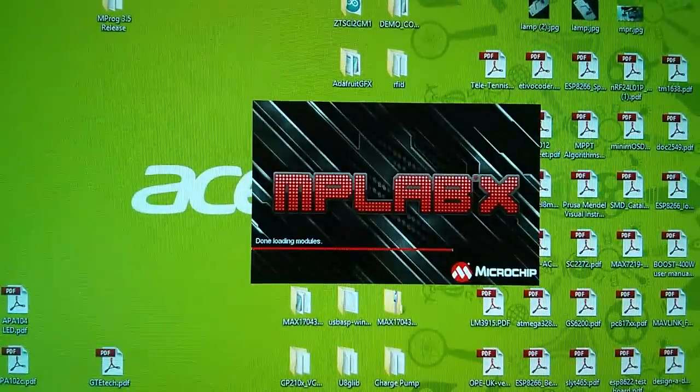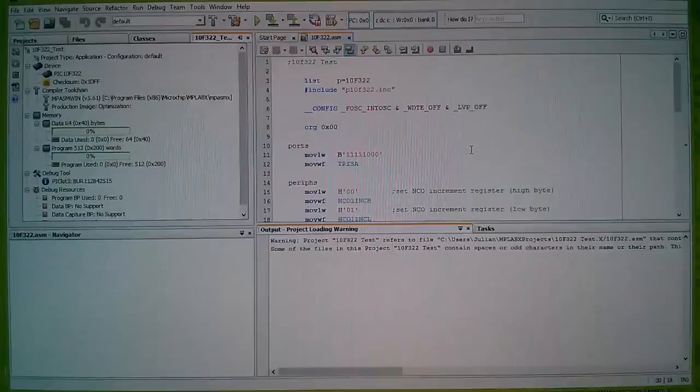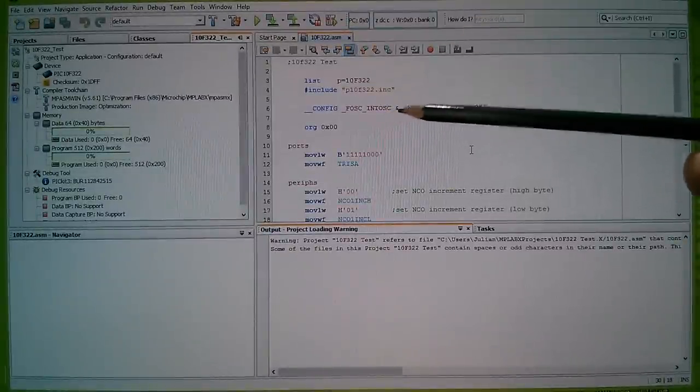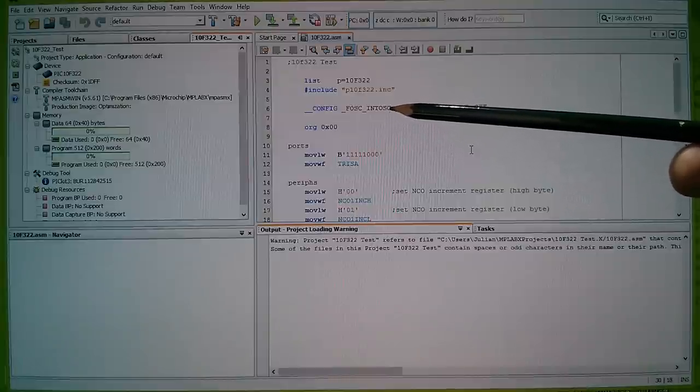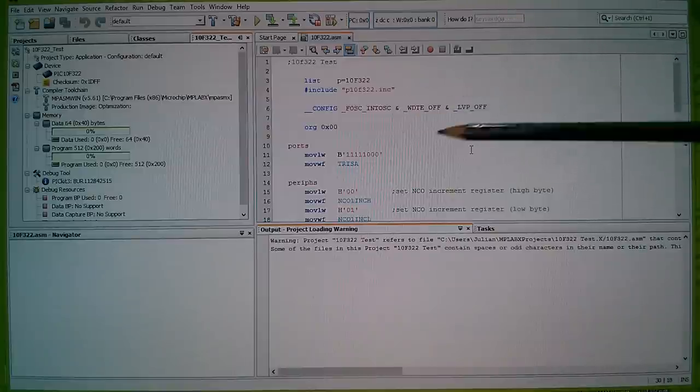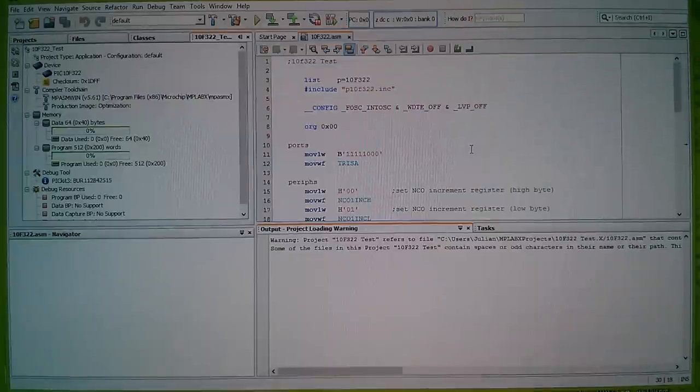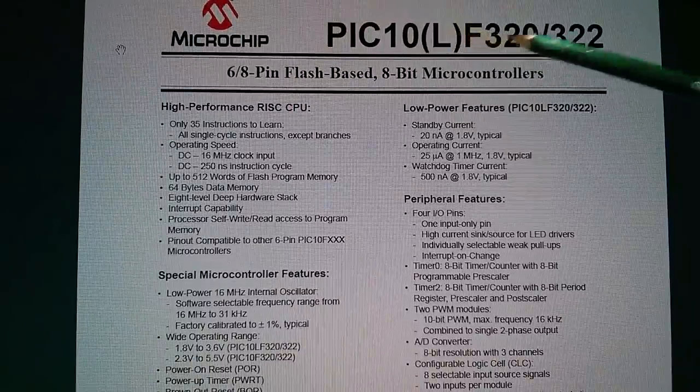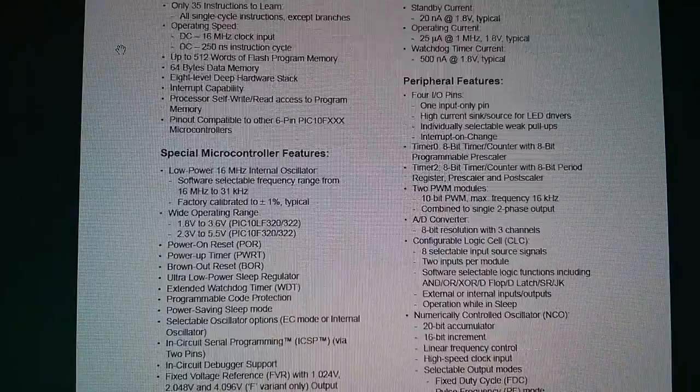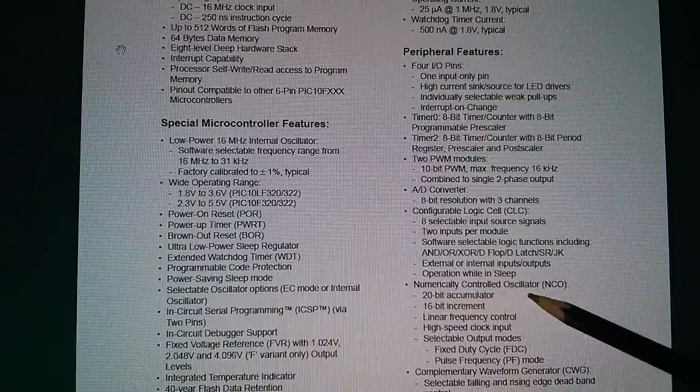So the programming environment is MPLAB X IDE. I'm just waiting for that to load up now. So this is the programming environment, and I've started writing a flashing LED program in PIC assembly language, but I'm not going to use the conventional method of set the LED pin high, go through a big long delay, set the LED low, and go through that delay again. I'm going to use one of the peripherals. So I'm also going to need the 10F322 datasheet. This is 200 pages long, so there's a fair bit to read. But the peripheral I want to use to make the LED flash on and off is this. It's the numerically controlled oscillator.